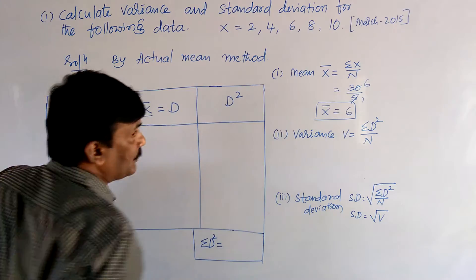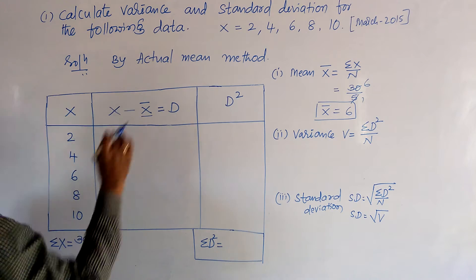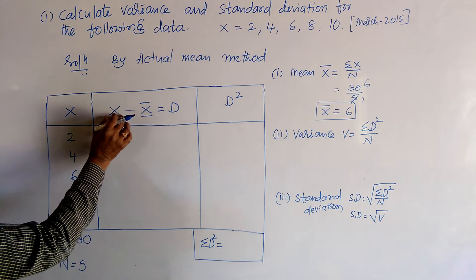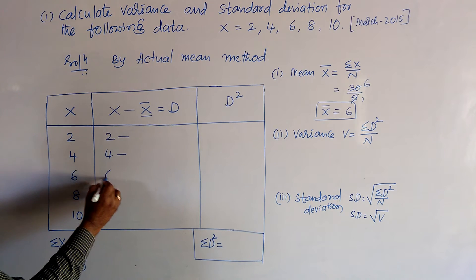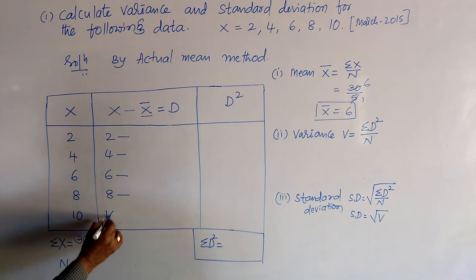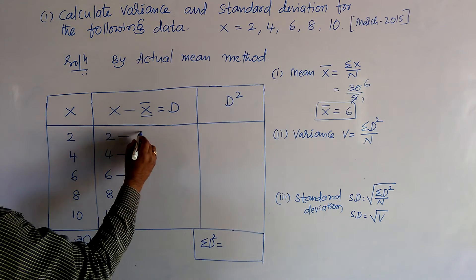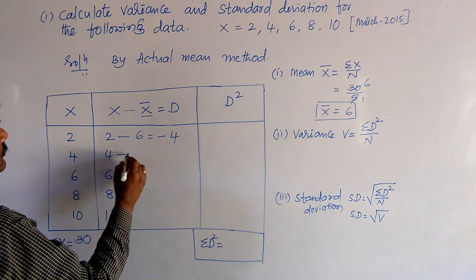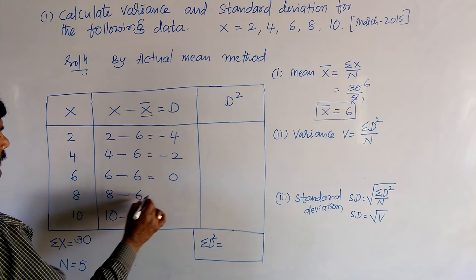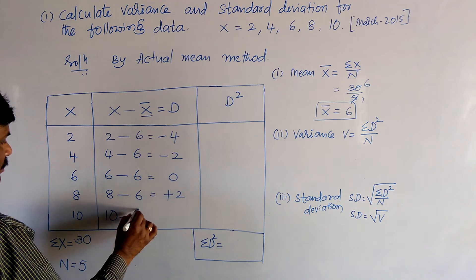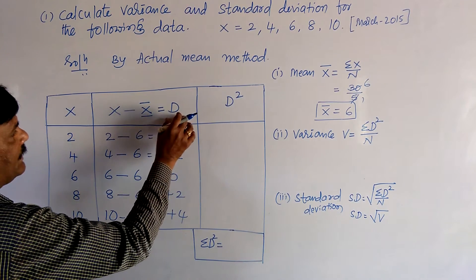Using x̄, we get the value of d, where d means deviation. Deviation is x minus x̄. So: 2 − 6 = −4, 4 − 6 = −2, 6 − 6 = 0, 8 − 6 = +2, 10 − 6 = +4. These values are the deviations d.